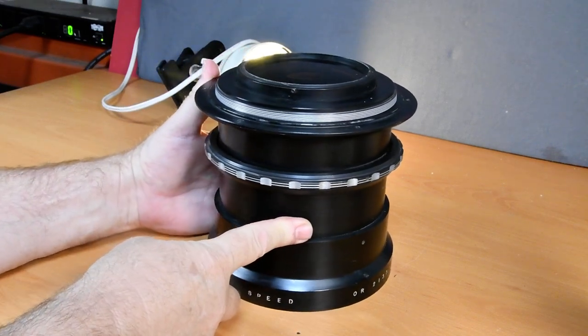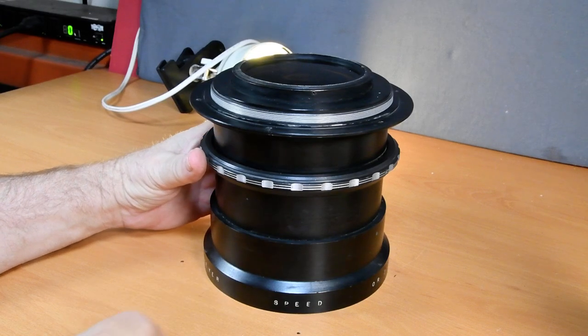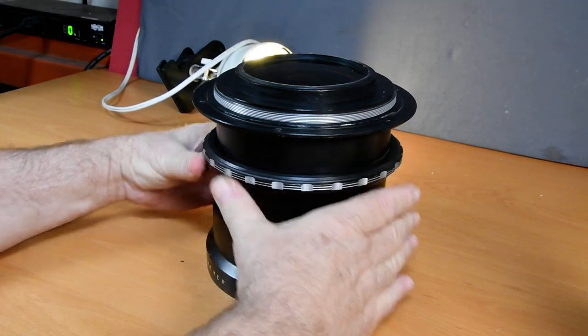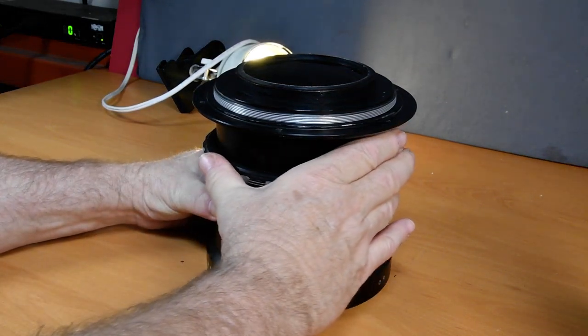OR2133, and so I guess it's a Carl Meyer speed lens. This is the aperture ring, turns real smooth.